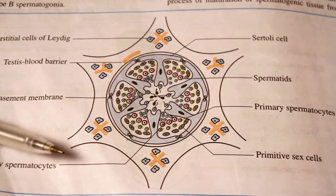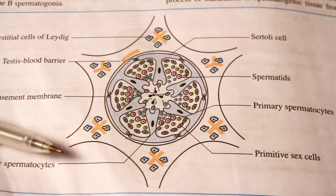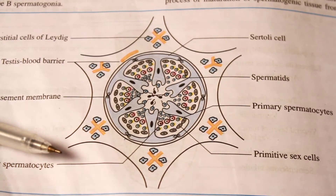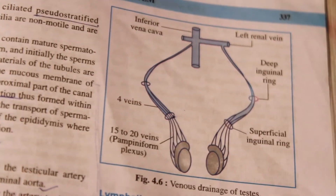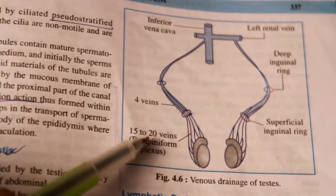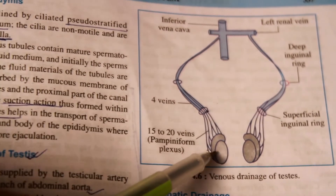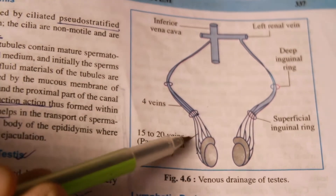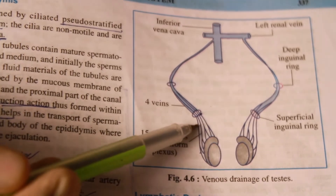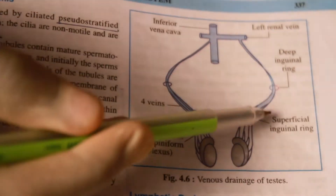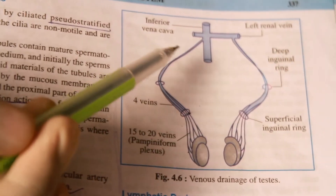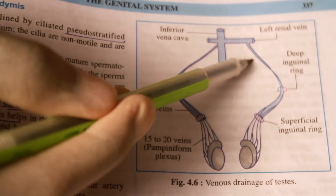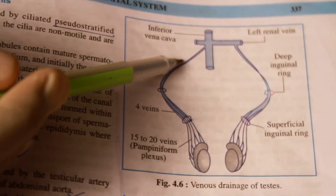Now come to the blood supply of testis. The testis is supplied by the testicular artery, which is a branch of the abdominal aorta. It also has accessory supply from the artery to the vas deferens and the cremasteric artery. The venous drainage of testis is by the pampiniform plexus of veins, formed by 15 to 20 veins arising from the posterior part of the testis and epididymis. This plexus unites to form 4 veins at the superficial inguinal ring, then 2 veins at the deep inguinal ring, and finally the testicular vein. The left testicular vein drains into the left renal vein, and the right testicular vein drains directly into the inferior vena cava.